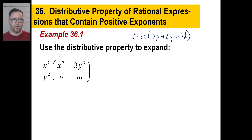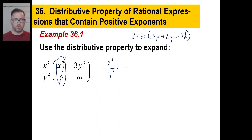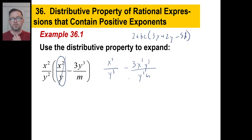Let's do one fraction at a time. Take this fraction times the first fraction: X squared times X squared — two plus two is four, so X to the fourth. Y squared times Y to the first is Y to the two plus one, which is Y cubed. Then X squared times negative three Y to the third: one times three is three, so negative three X squared Y cubed. Then Y squared times M. The only thing you can do is cancel — Y to the third divided by Y squared: three minus two is one, so the Y cubed becomes just Y.